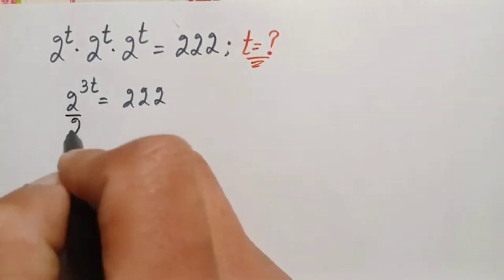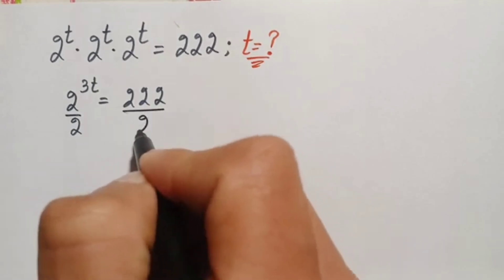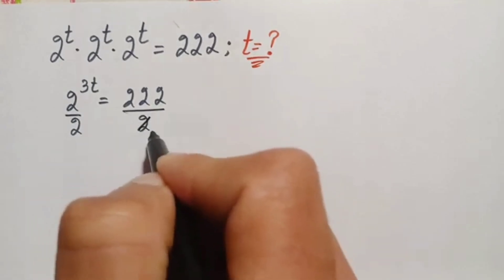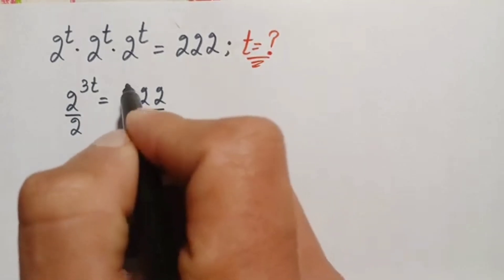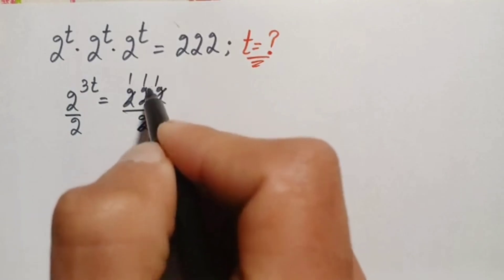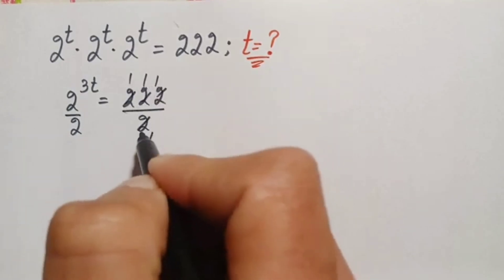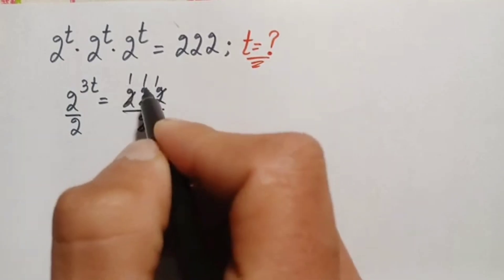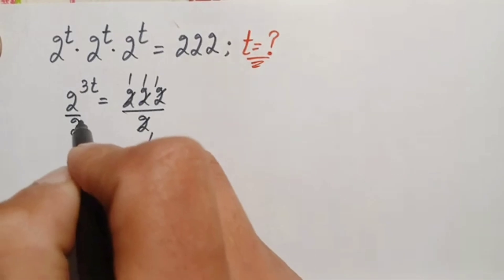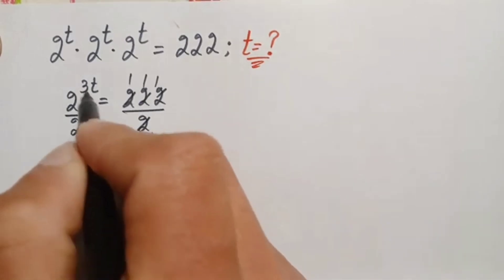Let us divide both sides by two. Dividing 222 by 2 gives 111 on the right hand side. The power of this denominator is one.